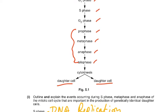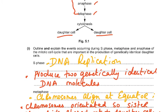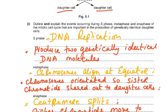The question says: outline and explain the events occurring during S phase, metaphase, and anaphase of the mitotic cell cycle that are important in the production of genetically identical daughter cells — so only those parts which are important. In S phase, DNA replication takes place and produces two genetically identical DNA molecules.